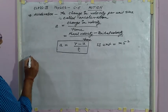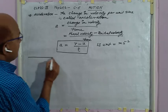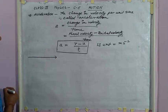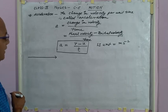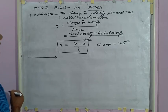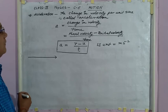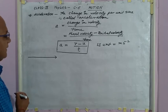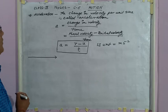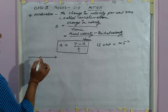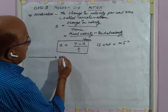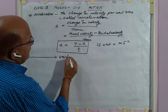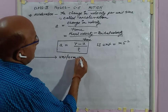When a body moves in a straight line, then if its velocity changes by equal amount in equal interval of time, then the acceleration of the body is said to be uniform. So, acceleration in a body may be uniform acceleration.